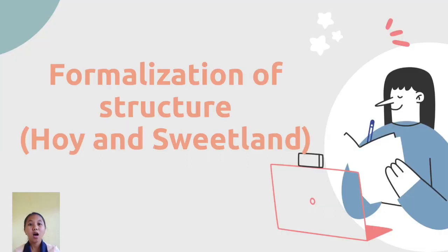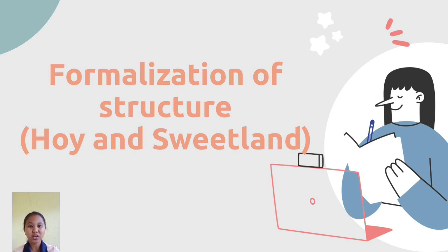As a recap, Paul Adler and Brian Boris in 1996 offered a passable solution as they interpreted formalization and centralization. Formalization is a system of written rules, regulations, procedures, and instructions, while centralization refers to the hierarchy of authority.